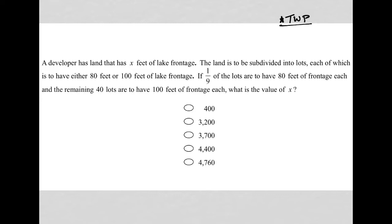The first sentence says a developer has land that has X feet of lake frontage. So I'm going to write down X equals total lake frontage. The next sentence, the land is to be subdivided into lots, each of which is to have either 80 feet or 100 feet of lake frontage. So a lot, which I'll call capital L for my variable, we don't know how many lots there are, but we do know there's choices. They can either be 80 or 100 feet of lake frontage.